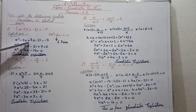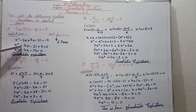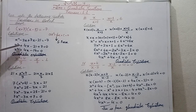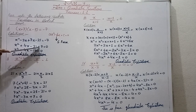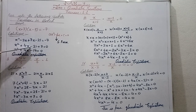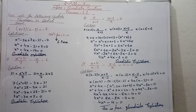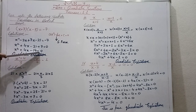7x minus 3x gives 4x, so x squared plus 4x minus 21. On the opposite side we have minus 7; when transferred to this side it becomes plus 7. Minus 21 plus 7: the greater value has a minus sign, so 21 minus 7 gives minus 14. Therefore x squared plus 4x minus 14 equals 0.